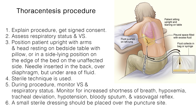Number two, assess the patient's respiratory status and vital signs, including pulse oximetry. Number three, position the patient upright with their arms and head resting on a bedside table with a pillow. If the patient is unable to sit, they may be placed in a side-lying position on the edge of the bed on the unaffected side.